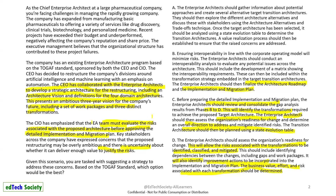However, Answer D doesn't talk about the strategic vision or architecture roadmap, whereas options B and C mention finalizing the roadmap and using the state evaluation table. You might get confused, but you need to see what the main thing is. The fourth paragraph says the EA team must evaluate the risk, and key stakeholder concern is that it is overly ambitious and needs to justify the risk. Therefore, Option D, with all the risk pointers, is the five-pointer best answer.